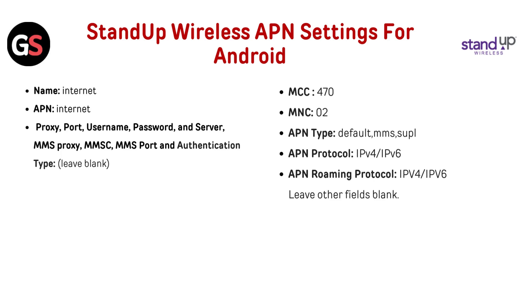Stand-up Wireless APN settings for Android. Name: Internet. APN: Internet. Proxy, Port, Username, Password, and Server: leave blank. MMS Proxy, MMSC, MMS Port, and Authentication Type: leave blank.